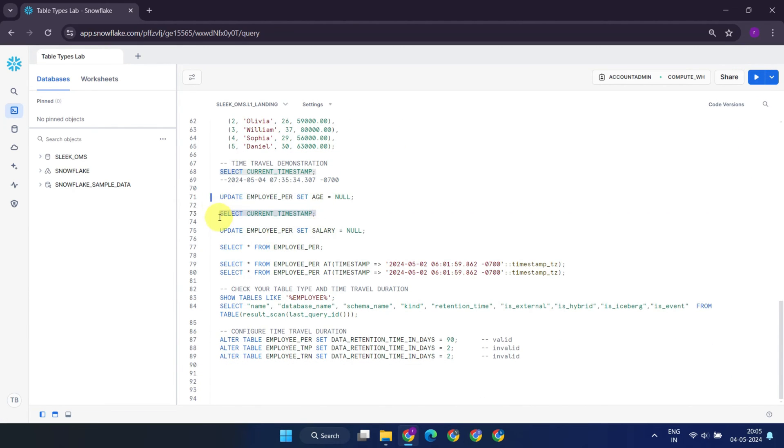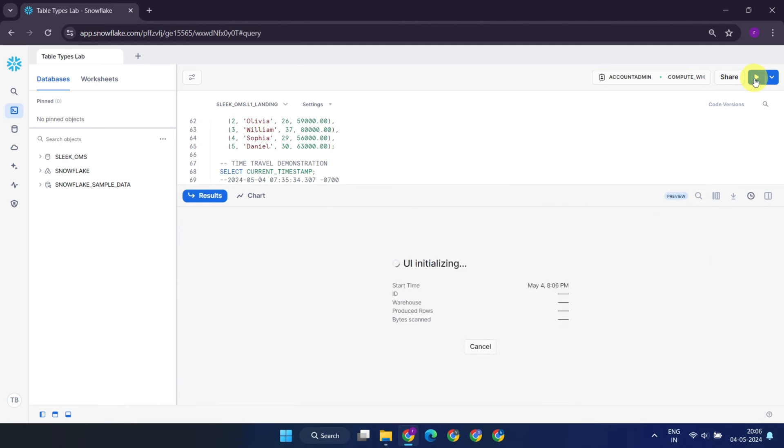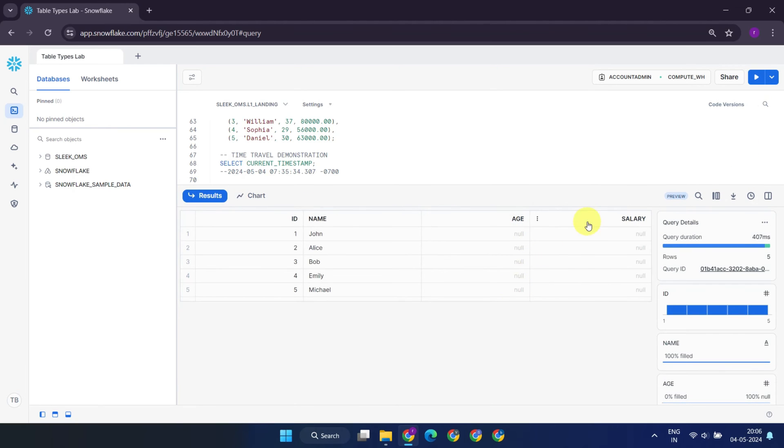Subsequently, let's record the current timestamp once more and make additional updates to the table data. After successfully executing these updates, when querying the table, you'll observe that both of these updates are reflected.